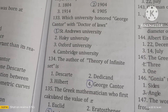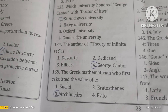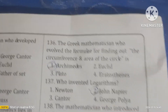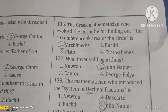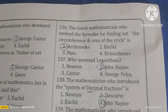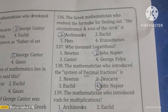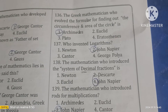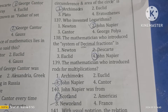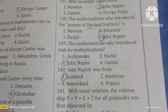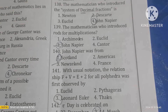The author of the theory of infinite sets is George Cantor. The Greek mathematician who first calculated the value of pi and evolved the formula for circumference and area of a circle is Archimedes. John Napier invented logarithms and introduced the system of decimal fractions. John Napier also introduced rods for multiplication, and he was from Scotland.